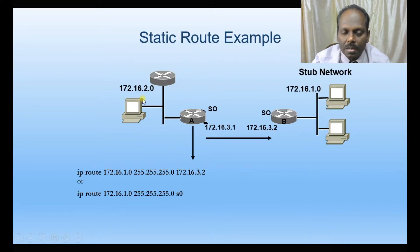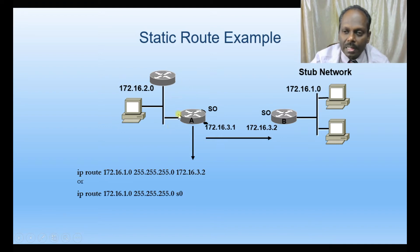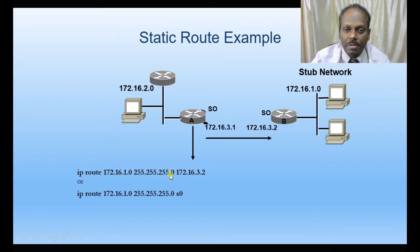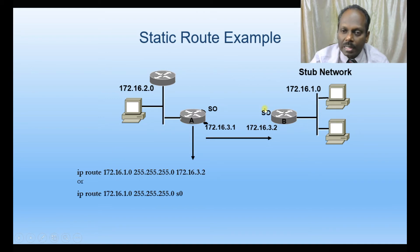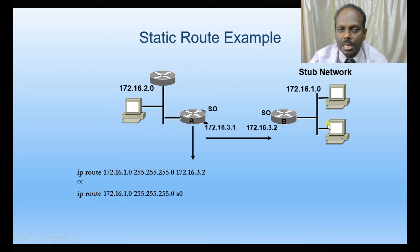To write a static route, the command is: ip route 172.16.1.0 subnet-mask 255.255.255.0, and then the gateway — which is 172.16.3.2 — so the router can query and identify the 1.0 network. You can also use the interface (e.g., S0) instead of the gateway IP. Once unknown networks are identified by the routers, communication becomes possible.